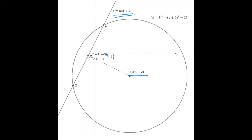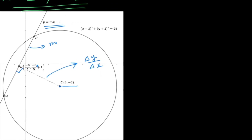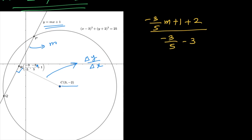It is clear that RC is perpendicular to PQ. The slope of PQ is m and the slope of RC is (difference in y)/(difference in x): (−3m/5 + 1 + 2)/(−3/5 − 3) = −1/m.